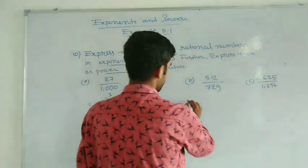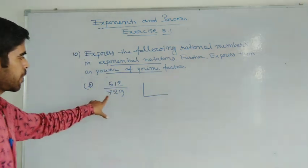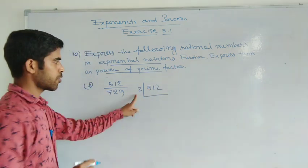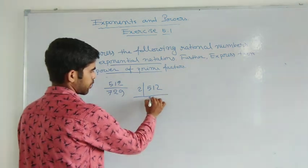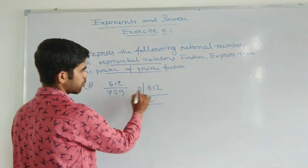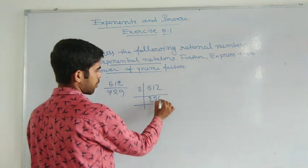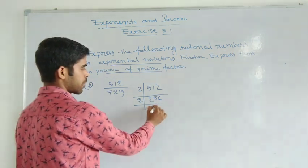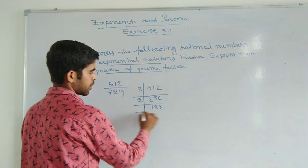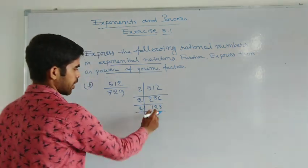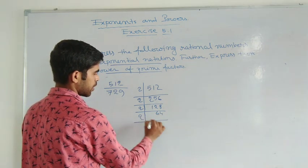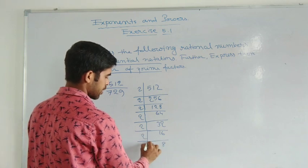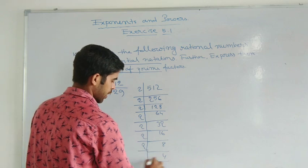Now see question number B: we have 512 over 729. So first we convert 512 into prime factors. Start dividing by 2: 2 goes into 512 two times, remainder one. Continue dividing by 2: 2 goes into 12 is six times. If you divide again by 2, you will get 6, then 4, then continuing until you get 32, 16, 8, 4, 2.